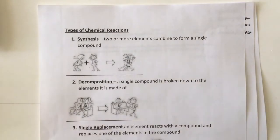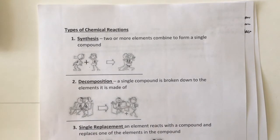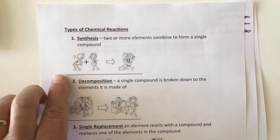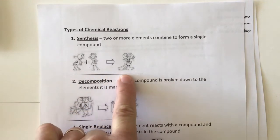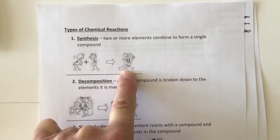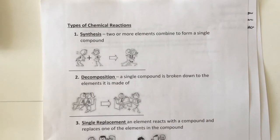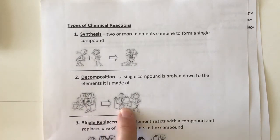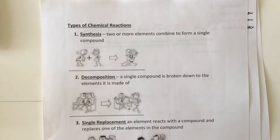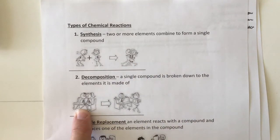Types of chemical reactions — this paper is available for you on Google Classroom. Synthesis is where we have two or more elements combined to form a single product; we are making something. Decomposition is just the opposite — a single compound is broken down into the elements or simpler compounds it's made of. In synthesis you have one product; in decomposition you have one reactant.